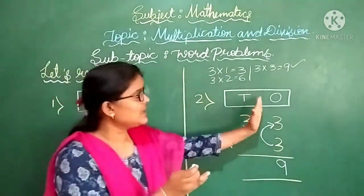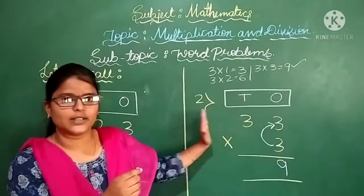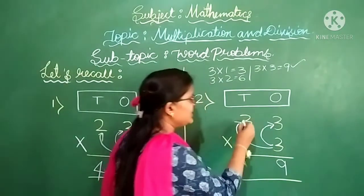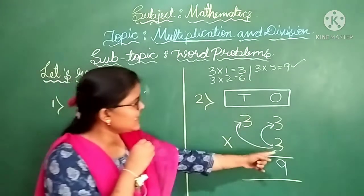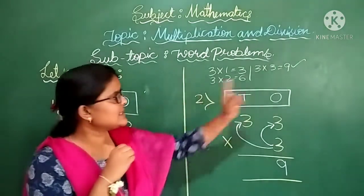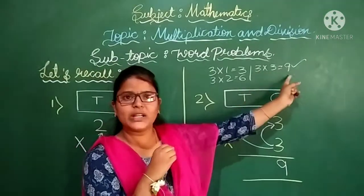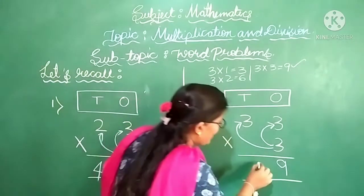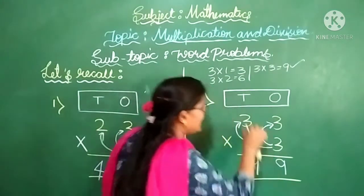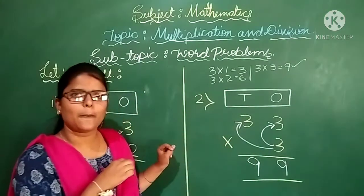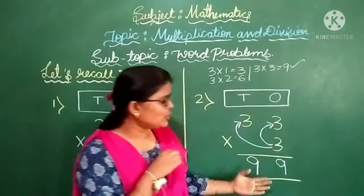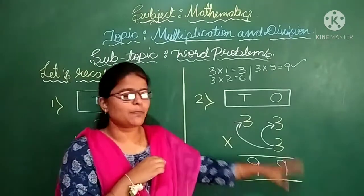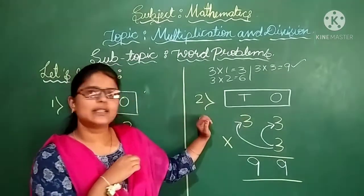Now we have to calculate the 10s part. You have to again multiply this 3 along with this 3. 3 into 3 — 3 threes are 9. Again the product is 9. Write down this 9 under the 10s column. Now the product is 99. 99 is the product of the second question.